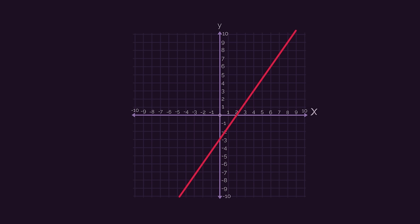Right, so for finding the gradient you take any two points on the line, but make sure they have to be exact coordinates. So these ones are good: zero negative three and four three.